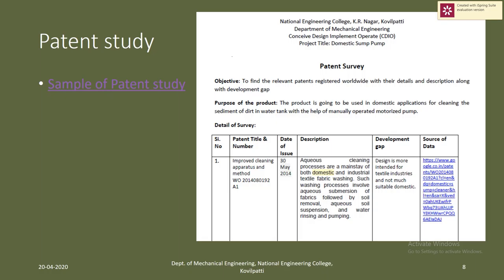In the documentation table, include columns for the patent title, number, date, and a description. The description should not just copy the abstract — you must read everything in the patent, understand it, and write the essence of it. Also include a 'development gap' column: after fully reading the patent, you may notice, for instance, that it is very large or lacks automation, and you may get ideas to further modify it or design something slightly different. Include the source of the patent data as well.